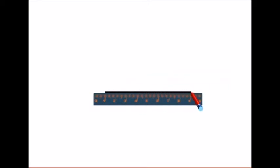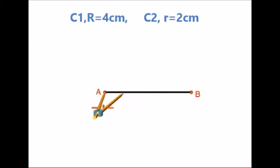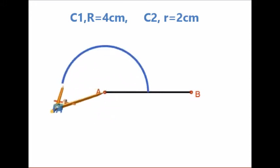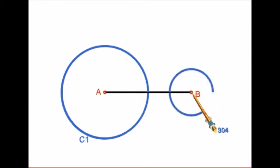The distance between the centers of the circles is 8 cm. Draw a line of length 8 cm and name the endpoints as A and B. With center A and radius equal to 4 cm, draw a circle — call it circle C1. With center B and radius equal to 2 cm, draw a circle — call it circle C2.